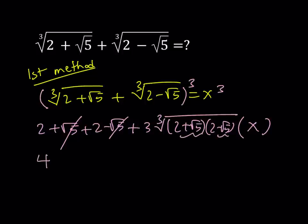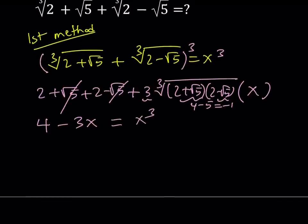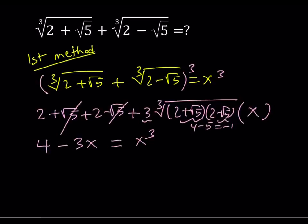From difference of two squares, this is going to become 4 minus 5, which is equal to negative 1. So I have the cube root of negative 1, which is negative 1, multiply by 3 — that is going to be negative 3x. Of course, we have to multiply by x, and the whole thing is equal to x cubed. So this gives me a cubic equation, which is fairly easy to solve.